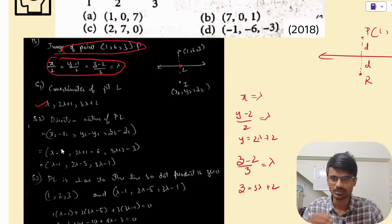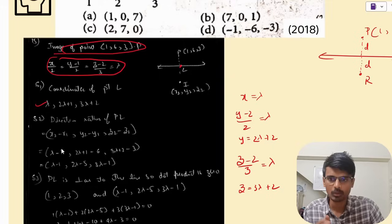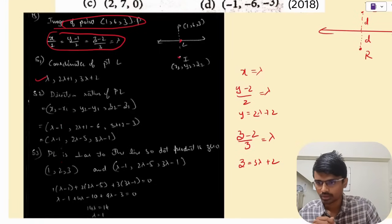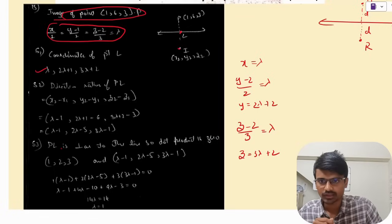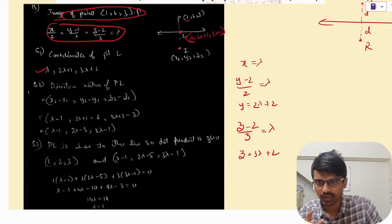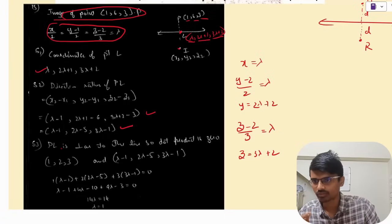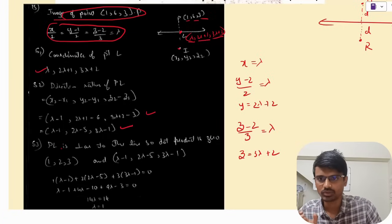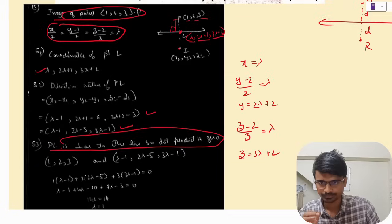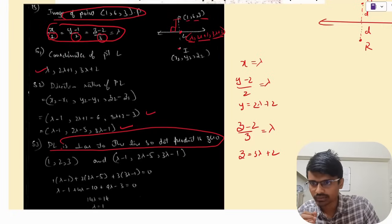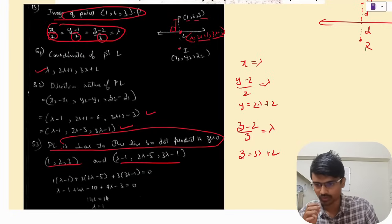Once we have the coordinates of L, our objective is to find L first, then apply the midpoint formula to find the image point. The direction ratios of PL are (λ−1, 2λ+1−6, 3λ+2−3). Since PL is perpendicular to the line, and the direction vector of the line is (1, 2, 3), their dot product is zero. From this we find the value of λ, and once we have λ, we can find the coordinates of point L.